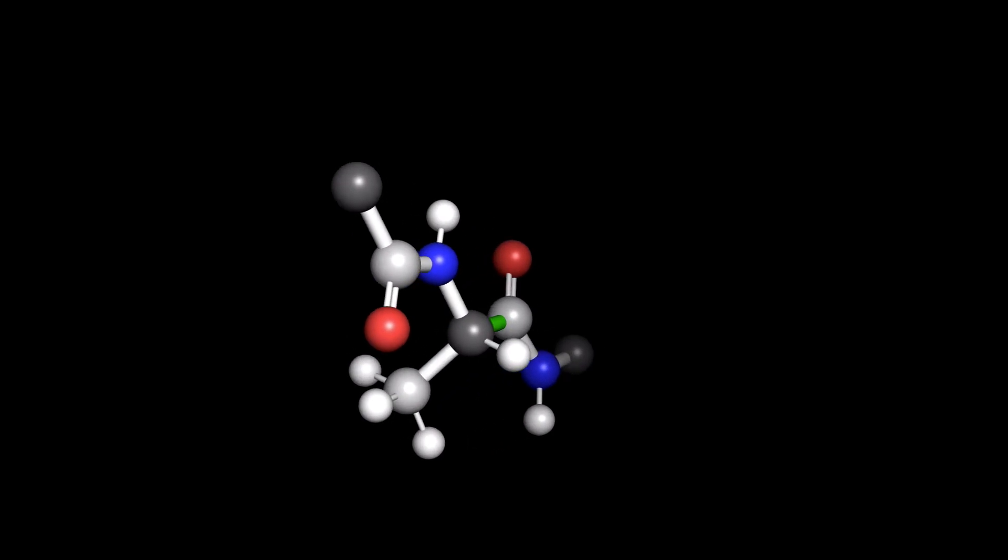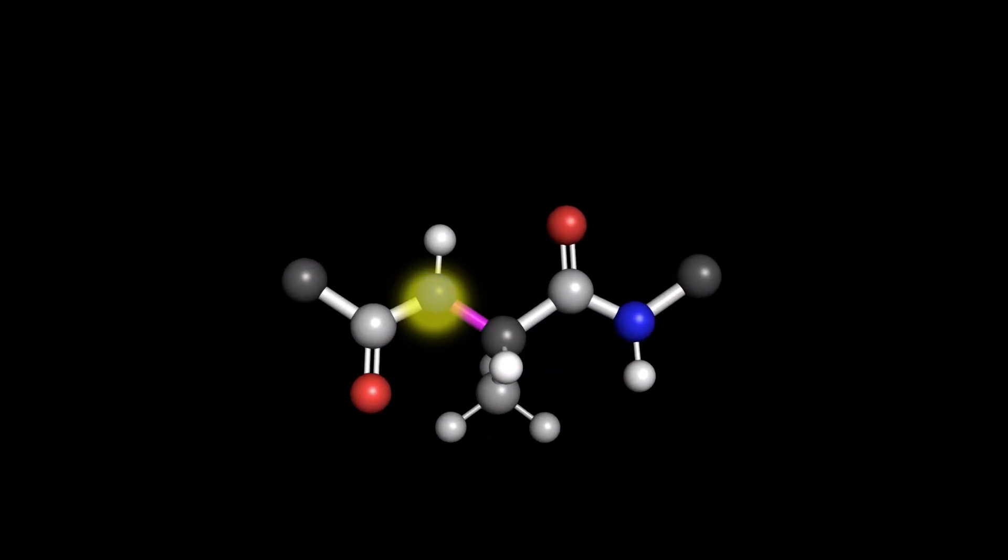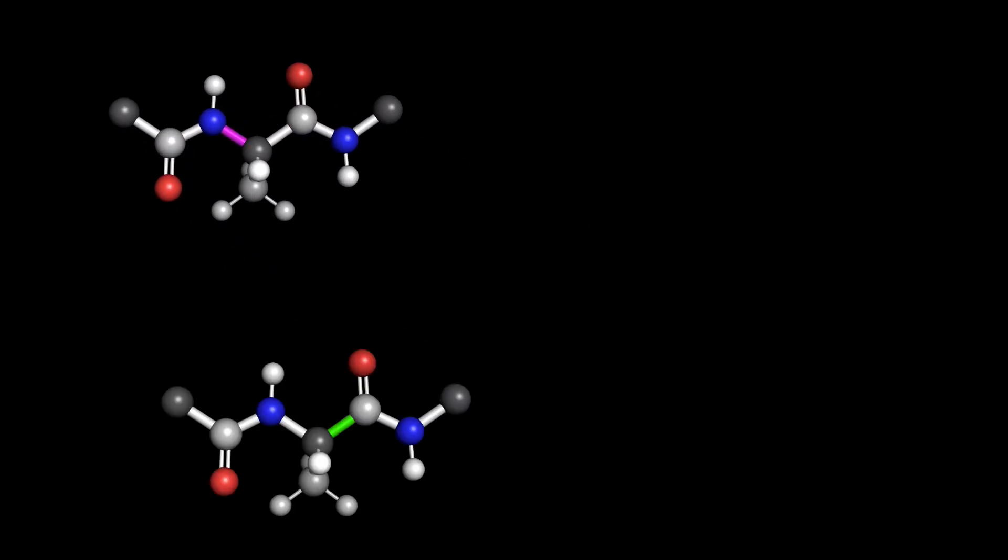When we look down the bond for the Φ angle, this nitrogen is going to be hidden behind the alpha carbon. What we'll be comparing is the angle between these two carbonyl carbon atoms. And, when we look down the bond for our ψ angle, this carbon atom is going to be hidden. So, here, we'll be comparing the angle between these two nitrogen atoms. So, essentially, we consider a four-atom pattern when looking at Φ and ψ.